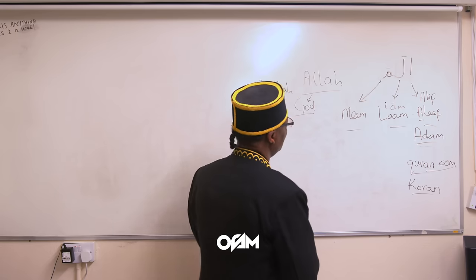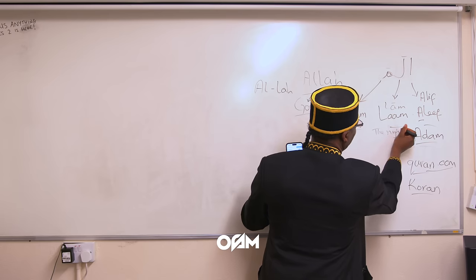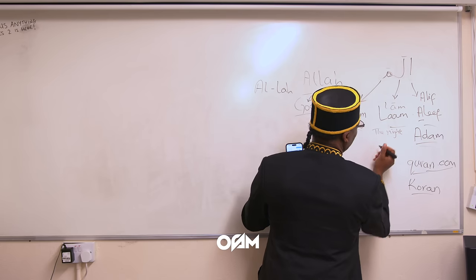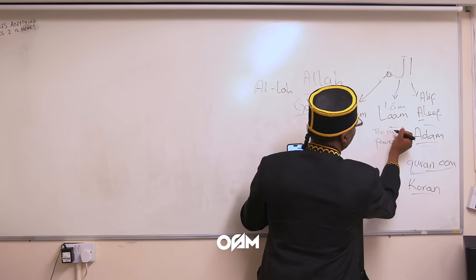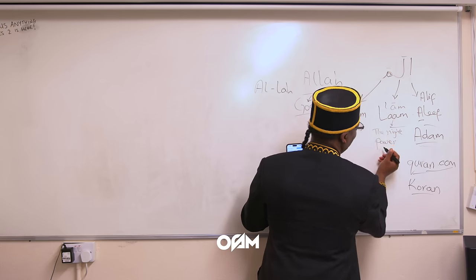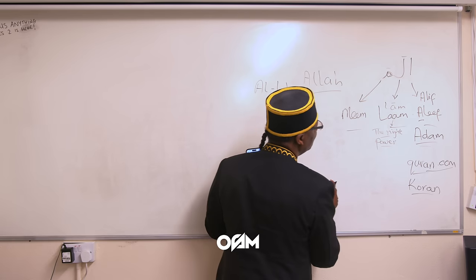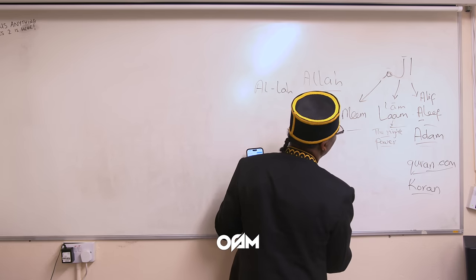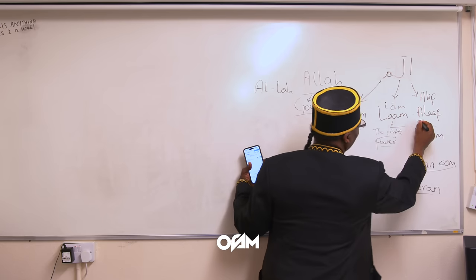The Lam is dealing with the Night of Power — the night where people recite the Quran all night. This is where a lot of information was received; they call it the Night of Power. And then finally the Meem — so we've covered the Alif, we've covered the Lam — and the Meem actually represents Muhammad.